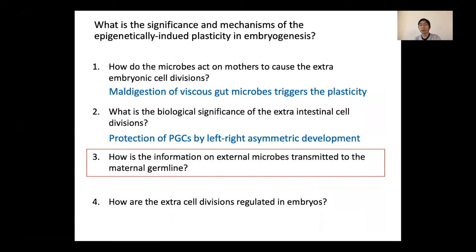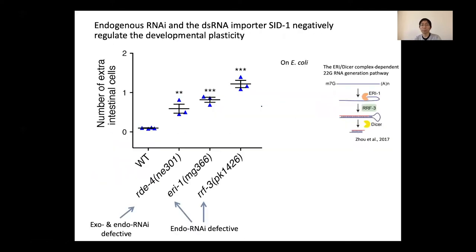The third question is related to how the information about maternal microbes is transmitted. Since the C. elegans embryo is isolated from the external environment by the eggshell, the information on microbes is highly likely to be transmitted first to the maternal germline. We investigated mutant phenotypes of genes involved in epigenetic regulation and found that endogenous RNAi, which is RNAi caused by endogenous small RNAs, is involved in this plasticity.